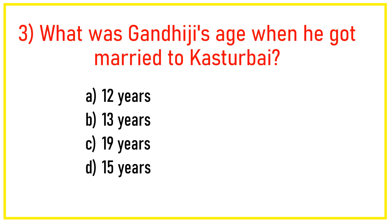Q3. What was Gandhiji's age when he got married to Kasturbai? Answer: Option B — 13 years.